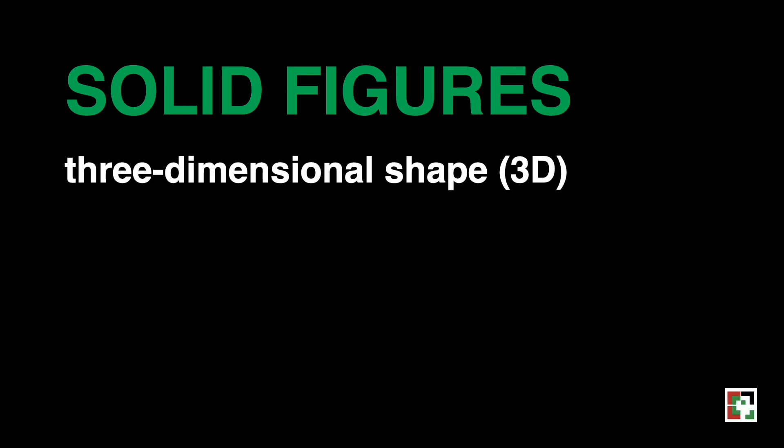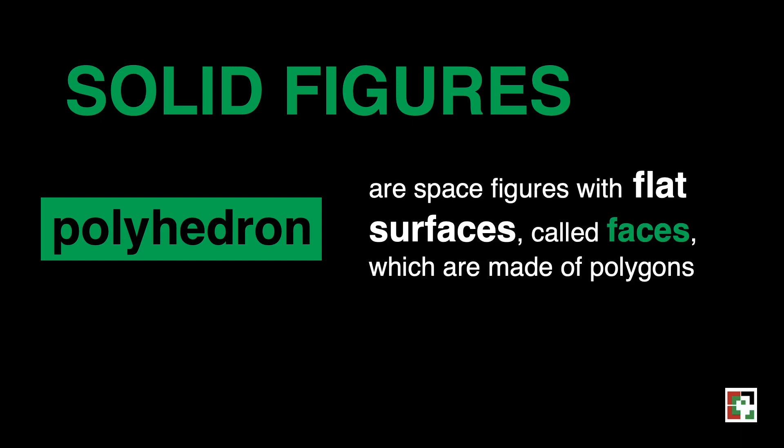What are solid figures? They are three-dimensional shape figures that have length, width, and height. But before anything else, I would like to discuss this term because it's very important and that is polyhedron. Polyhedrons are space figures with flat surfaces called faces, which are made up of polygons.